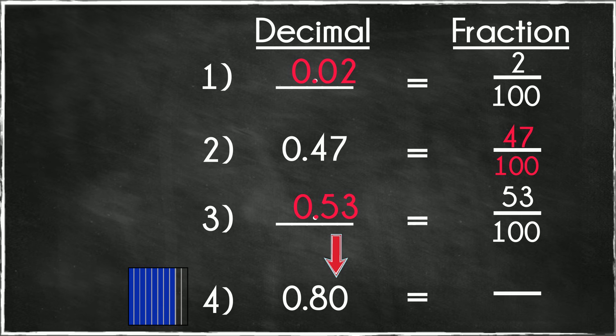Number 4. Did this zero throw you off? This decimal number has 8 tenths, and so is written as 8 tenths. You might have written 80 hundredths, which is also correct.